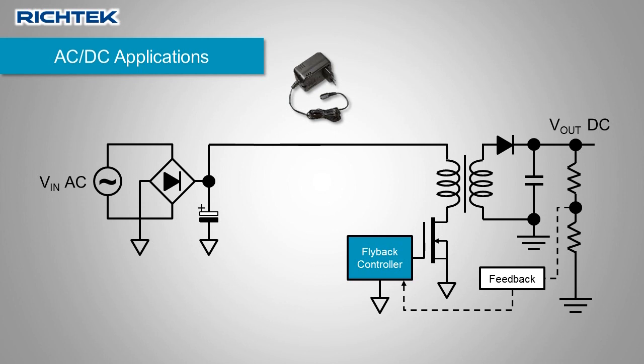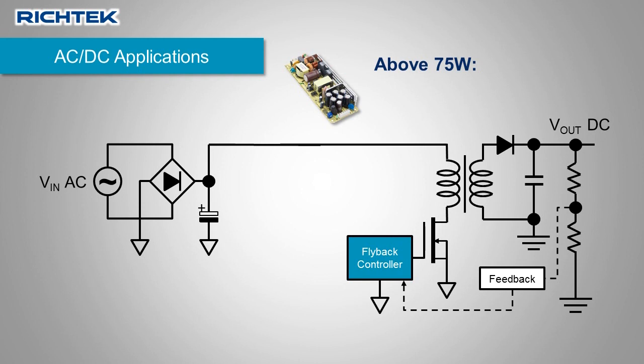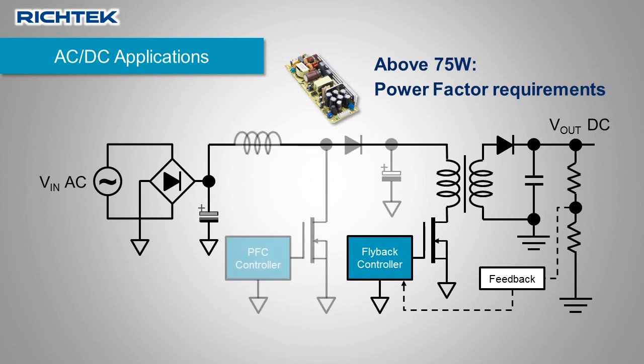Power supplies with power ratings above 75 watts, like open frame industrial supplies, will need to meet specific power factor requirements. In these systems, a PFC boost stage is added, which provides a stable supply to the flyback stage and controls the boost input current to meet power factor and AC line input current harmonic requirements.